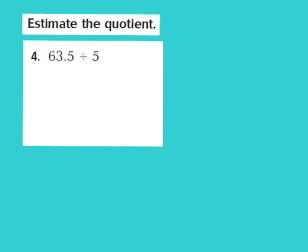Let's look at question number 4. Our job is to estimate the quotient using compatible numbers. They give us 63 and 5 tenths divided by 5. Looking at my divisor of 5 — 5 is a pretty easy number to work with mentally — so I'll keep my divisor as 5. Now I need to find a number close to 63 and 5 tenths that is compatible with 5.